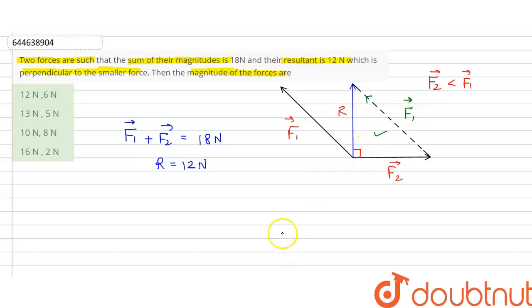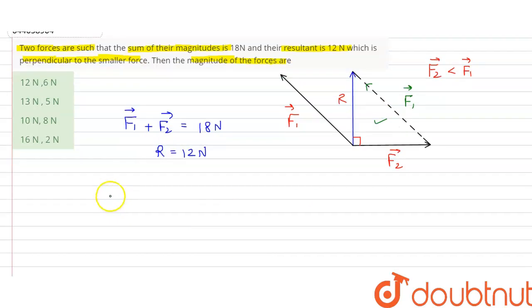Now this triangle is our right angle triangle, so we can apply the condition that is R squared plus F2 squared is equal to F1 squared. This is from the Pythagorean theorem.